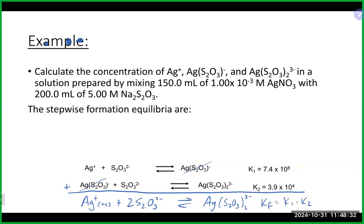We can write a Kf for this overall reaction, which equals k1 times k2. When we add reactions together we multiply the K values. So that's 7.4×10⁸ times 3.9×10⁴, which gives us something in the ballpark of 2.9×10¹³.